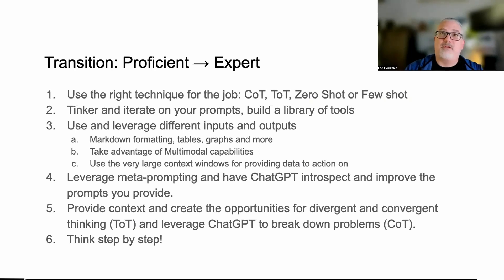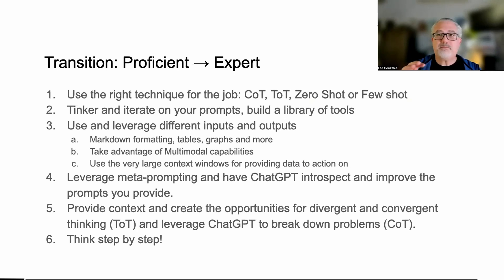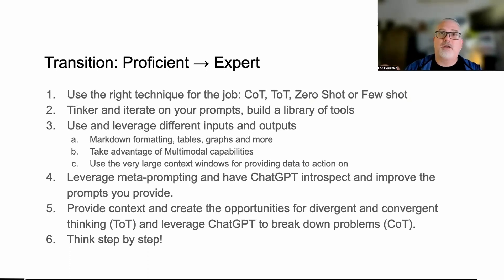At the proficient to expert level, this is where people really start to think deeply about what process they're applying and the 'how' behind the 'what' of working with prompts. This is where people can move from proficient toward more of an expert level - and this is when I think we might consider people to be actual prompt engineers. There are about six things I think about here: What's the right technique for the job? Zero shot prompting, in-context learning, chain of thought, tree of thought - are you paying attention to the papers and academic studies coming out and finding new techniques? Because it's continuously moving.